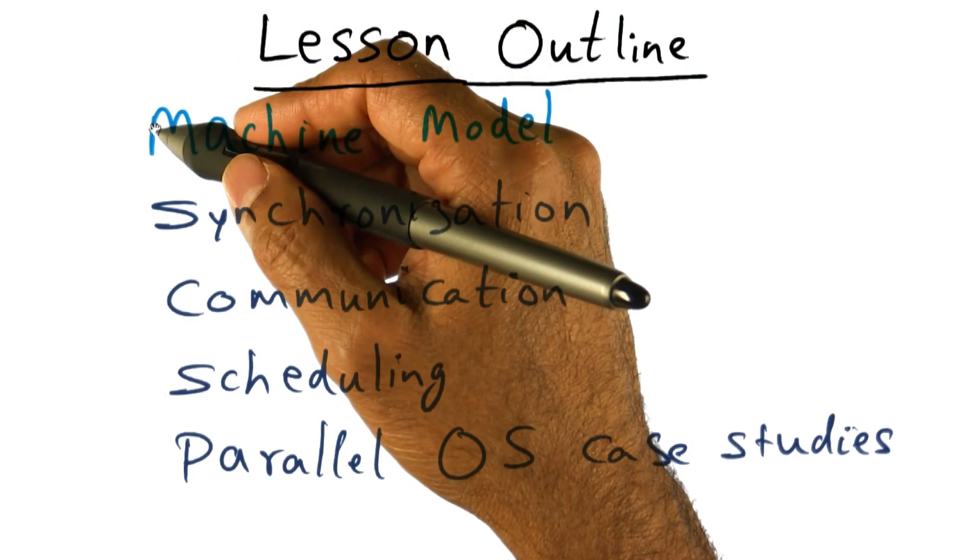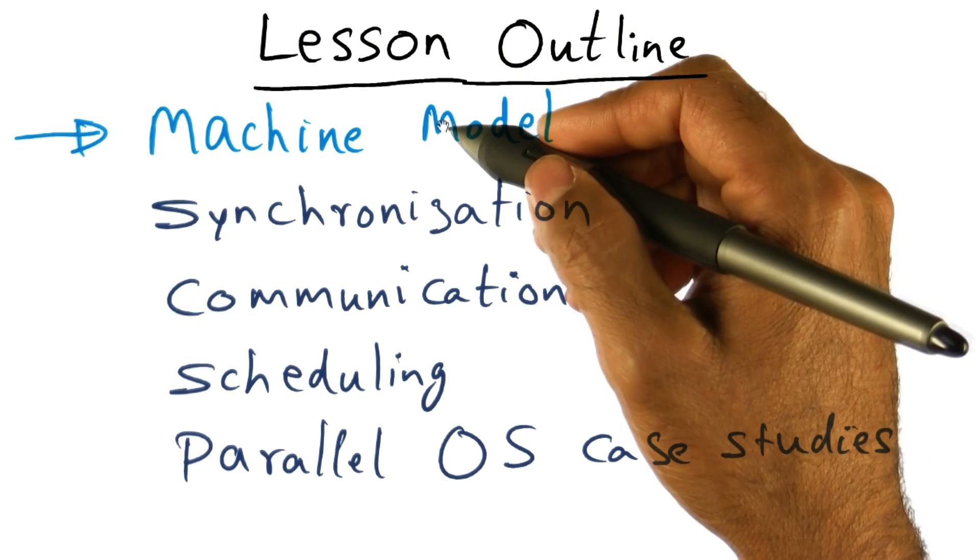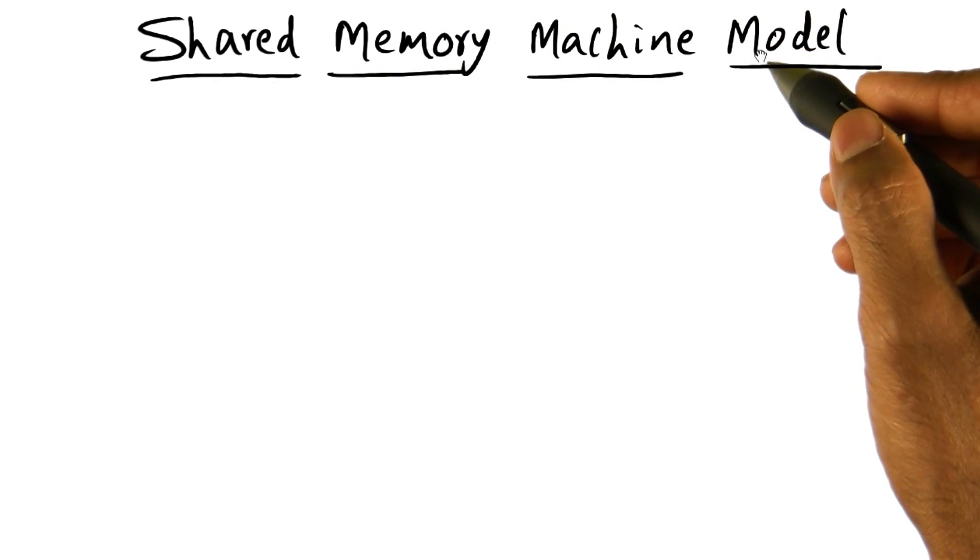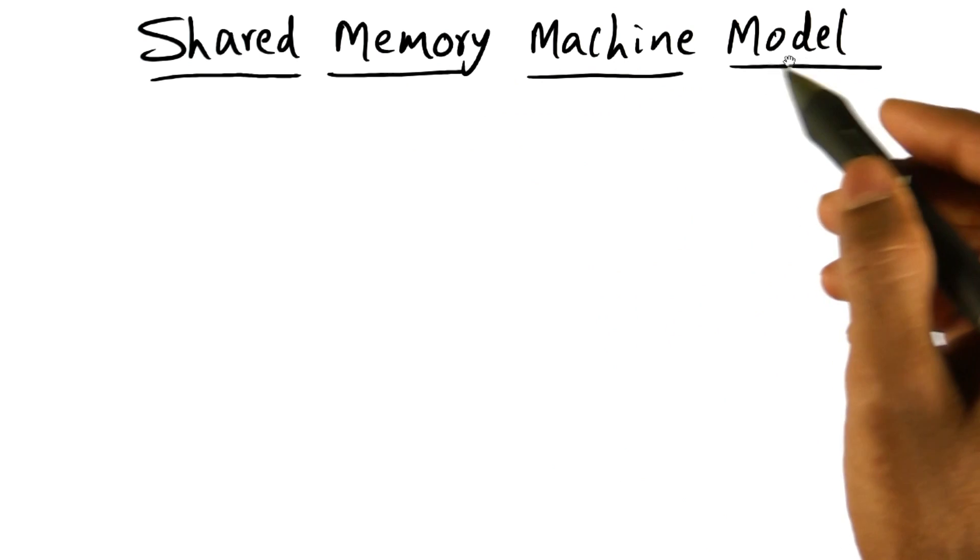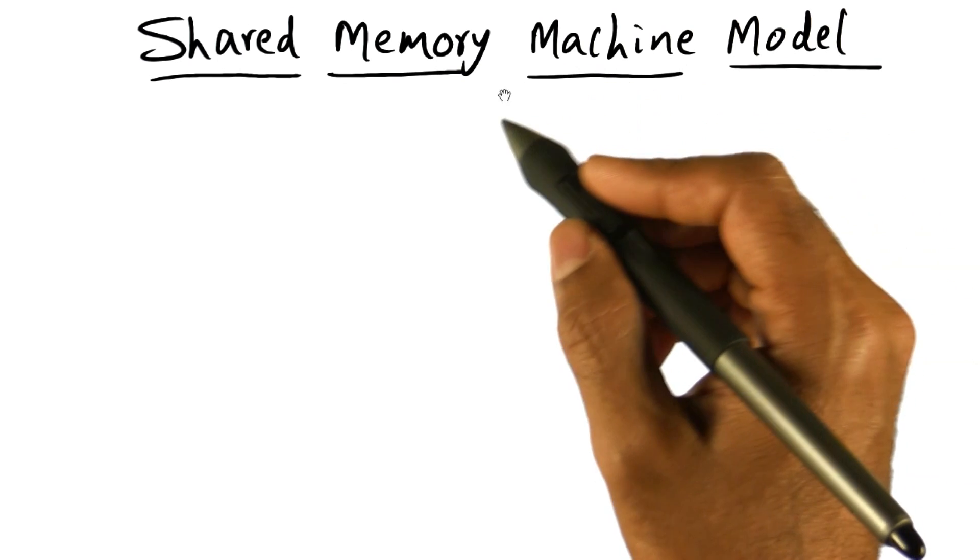We'll start today's lecture with a discussion of the model of a parallel machine: a shared memory multiprocessor, or shared memory machine. We can think of three different structures for this shared memory machine.